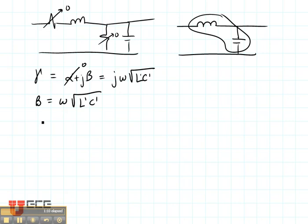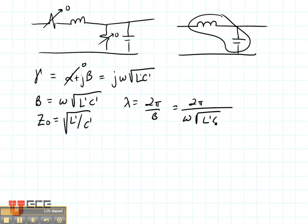The characteristic impedance, Z-naught, is the square root of L divided by C. The wavelength is always 2 pi divided by beta, and that gives us 2 pi divided by omega square root of LC.